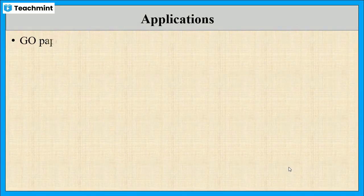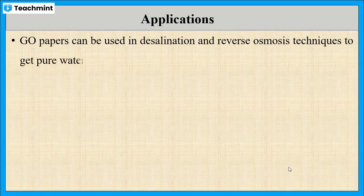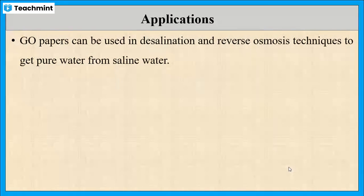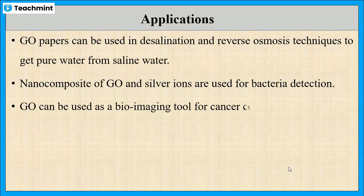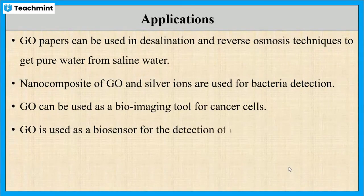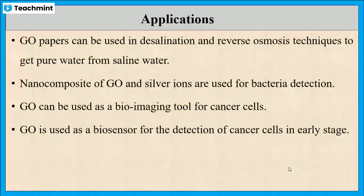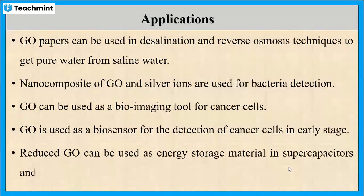Next, let us see some of the applications of graphene oxide. Graphene oxide papers can be used in desalination and reverse osmosis techniques to get pure water from saline water. Nanocomposites of graphene oxide and silver ions are used for bacteria detection. It can also be used as a bioimaging tool and biosensor for the detection of cancer cells. Reduced graphene oxide can be used as an energy storage material in supercapacitors and lithium-ion batteries.